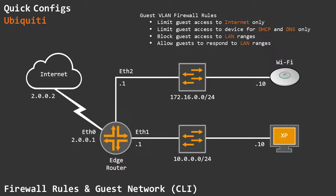In this example I want to show you how to configure firewall rules to incorporate a guest network in your Ubiquiti environment. My EdgeRouter is over here — I already configured all of my interfaces. I have the eth0 interface on the WAN side at 2.0.0.1 with a default gateway going out to my simulated internet, and on the LAN side I have the eth1 interface sitting in the 10.x range — this is my trusted LAN, on which an XP machine is present at .10.